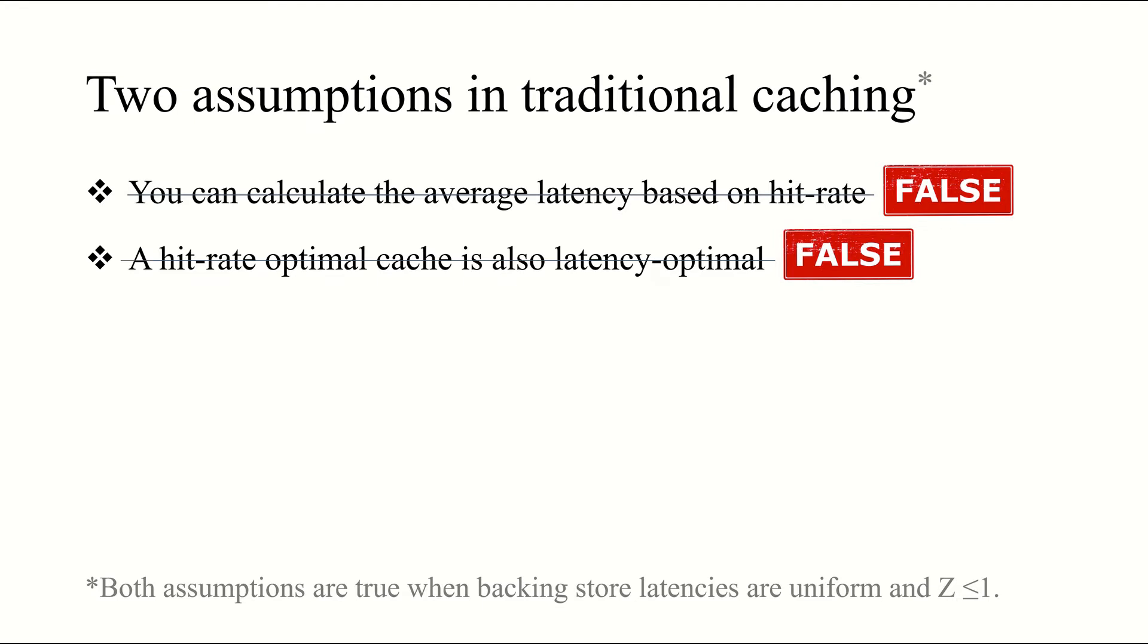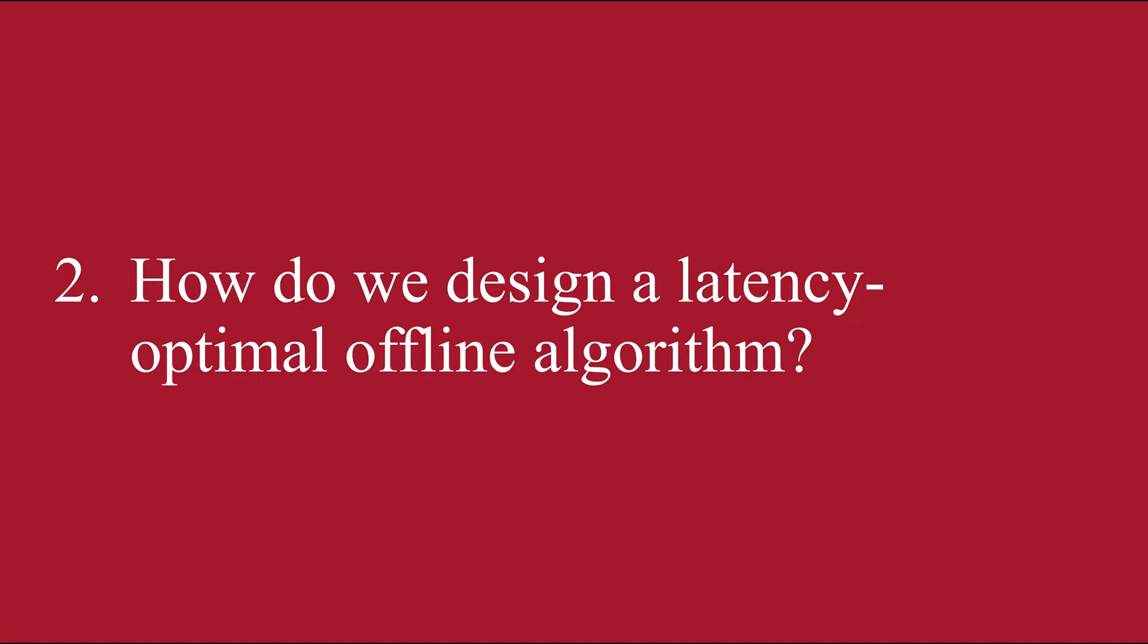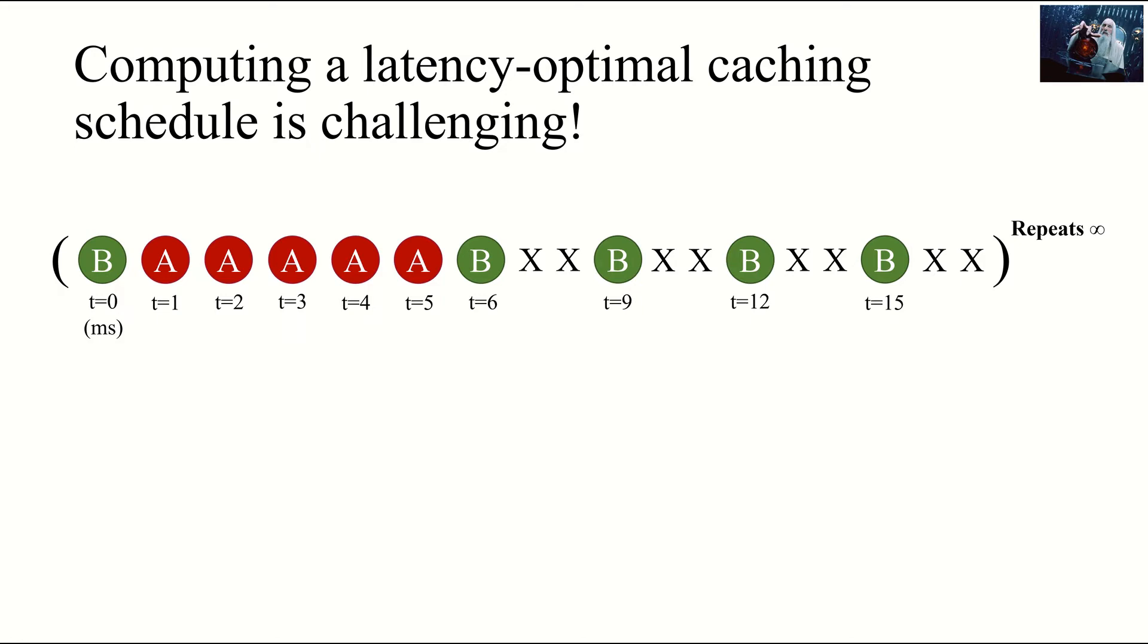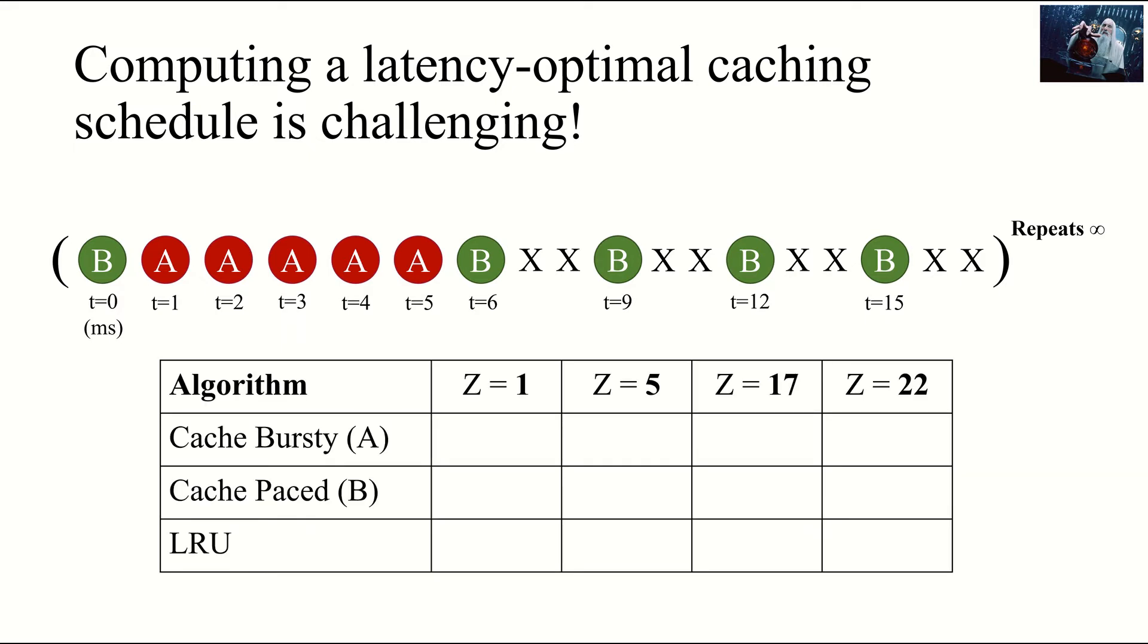So it turns out that a hit rate optimal algorithm isn't latency optimal either. These observations motivate our design of an optimal caching strategy for the delayed hits problem. However, it turns out that computing such a latency optimal cache schedule, even with knowledge of the future, can be quite challenging. Once again, we have access to our wizard who tells us the future, and we have this request sequence with just two objects, A and B. The x's here denote empty time slots, that is, no arrivals, and the sequence repeats infinitely. Given a cache of size 1, our task is to find a schedule that minimizes latency. We also consider these three algorithms: always cache the bursty object A, always cache the paced object B, or simply use LRU. Can you guess which of these algorithms will perform the best? I'll give you a few seconds to think.